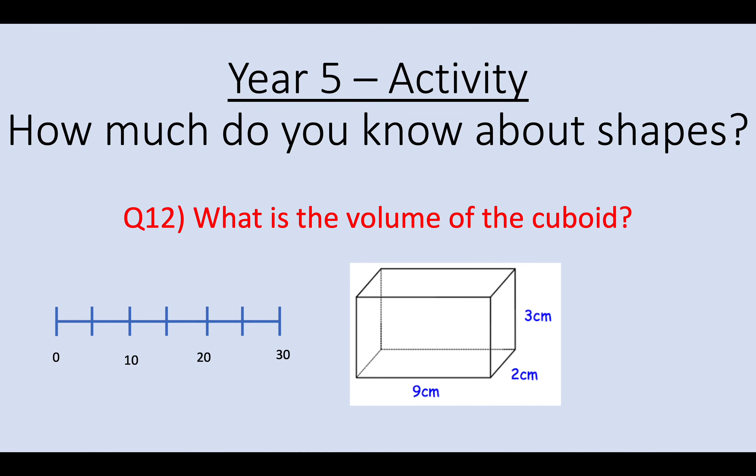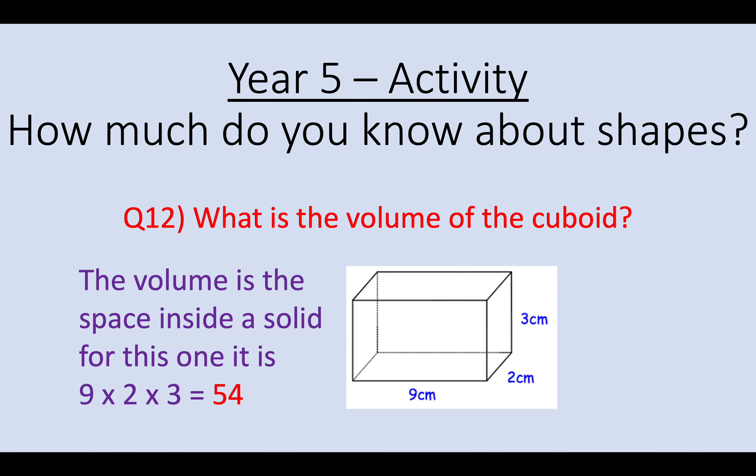And question 12. Your final question. What is the volume of the cuboid? And for this particular one, all you have to do is multiply your three sizes or dimensions together. So 9 times 2 times 3 means that the volume of this particular cuboid is 54. And so your answer to question 12 is the number 54.